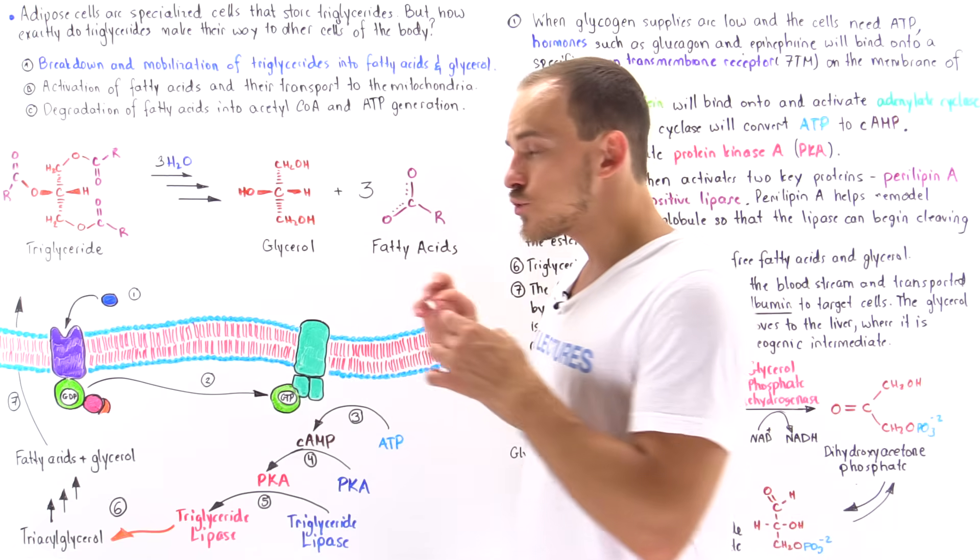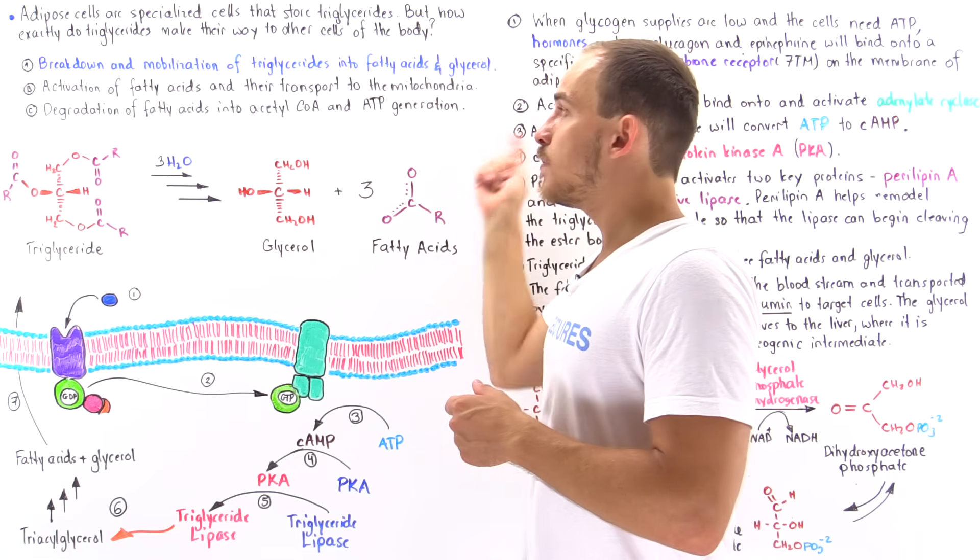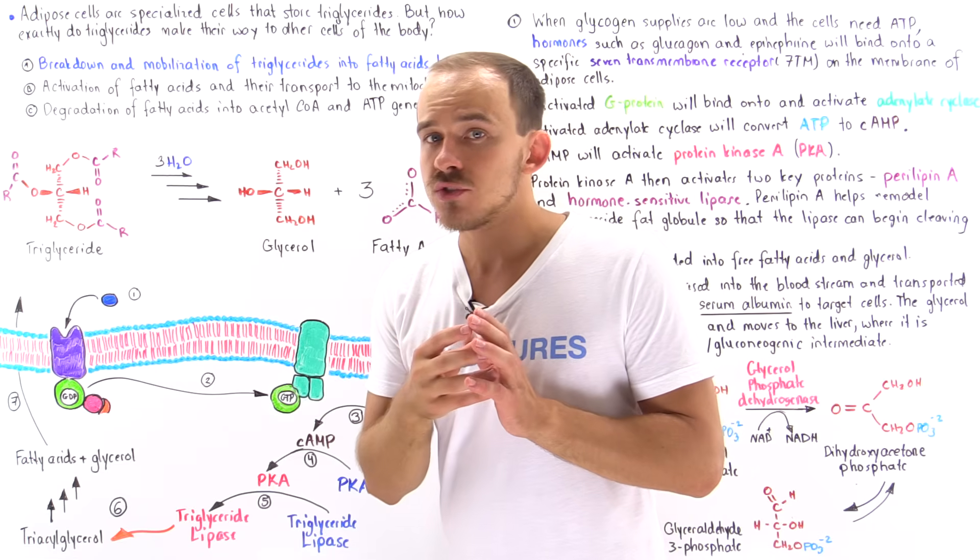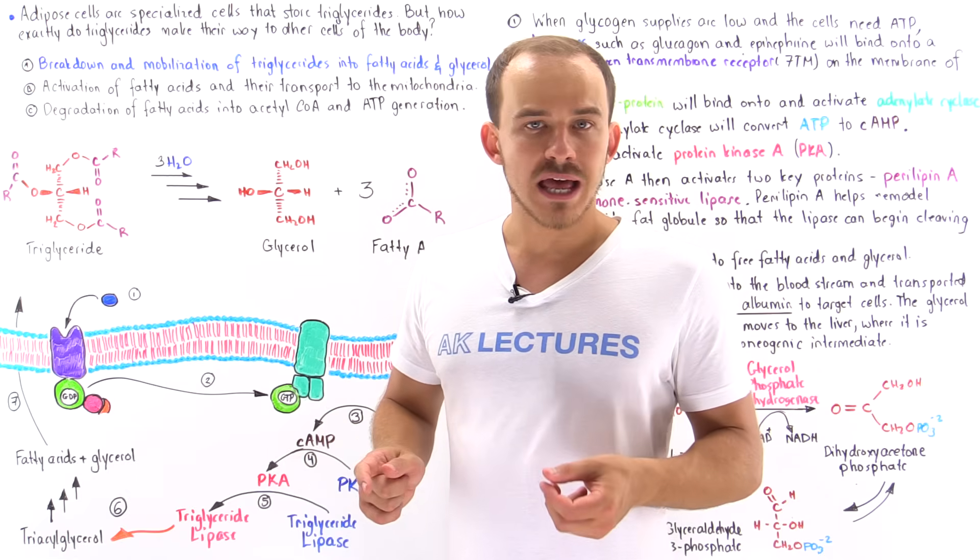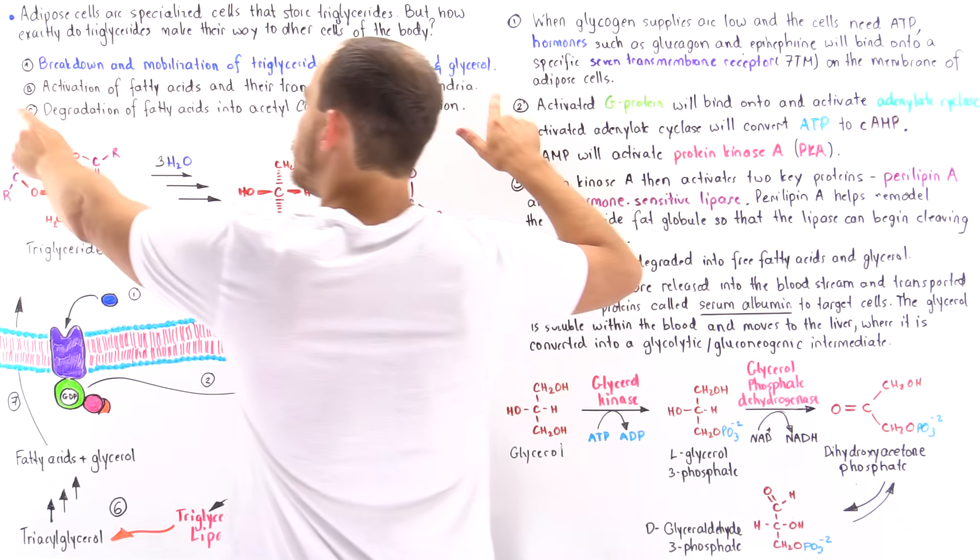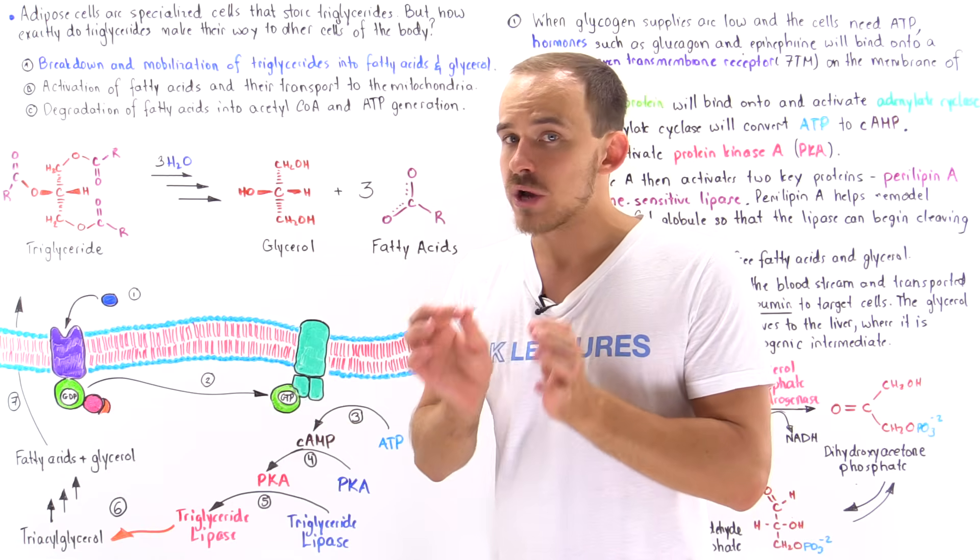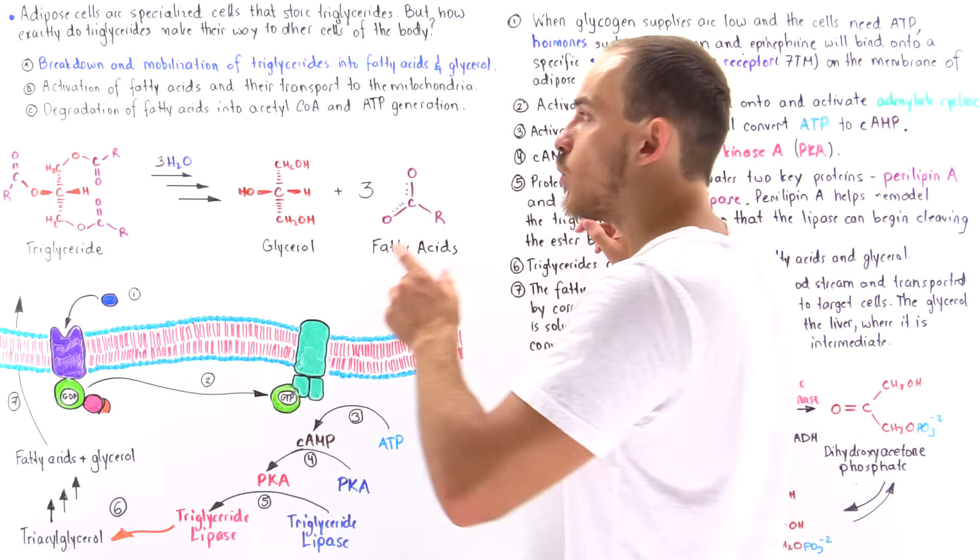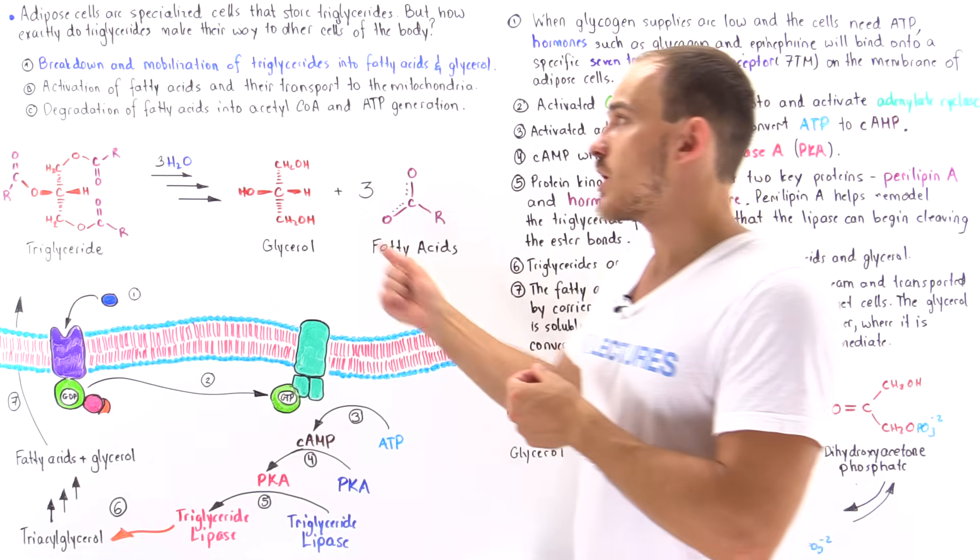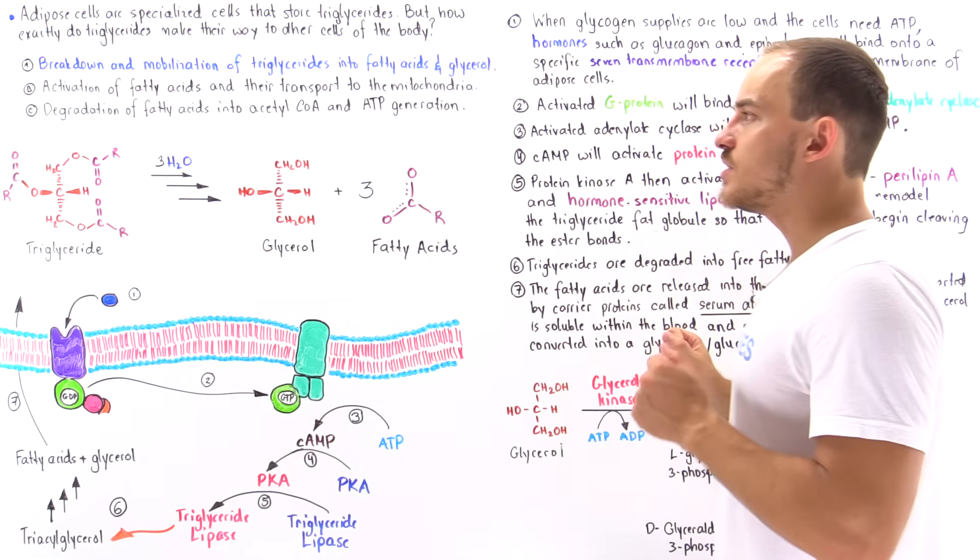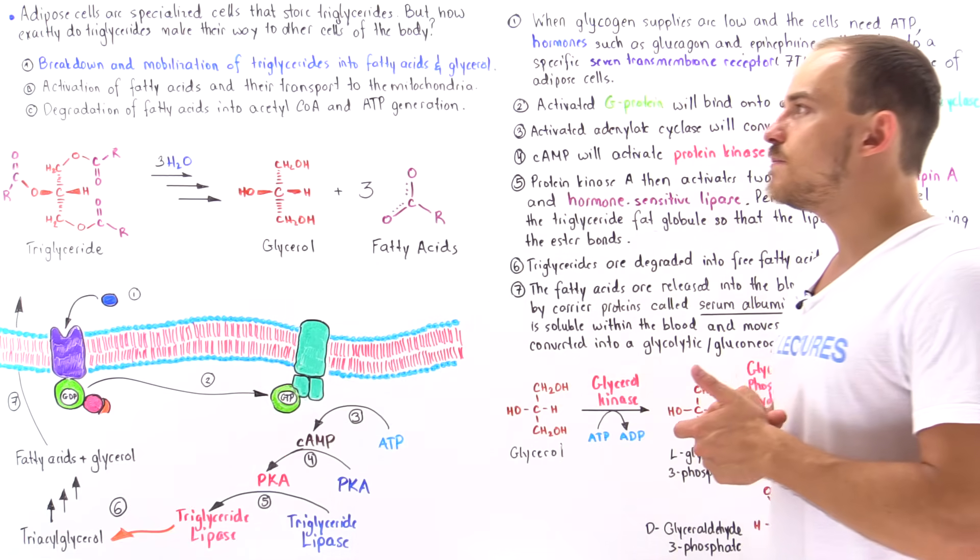In stage one, triglycerides are broken down and mobilized into their fatty acid and glycerol form. Once that takes place, the fatty acids are released into the bloodstream and carried to their target cell. Once the fatty acid makes its way into the cytoplasm of that target cell, stage B takes place. In stage B, these fatty acids are activated, made more reactive, and then transported into the matrix of the mitochondria. That's when stage C begins. In stage C, those fatty acids are broken down in the matrix of the mitochondria into acetyl coenzyme A molecules. These acetyl coenzyme A molecules can be fed into the citric acid cycle to help us generate high energy ATP molecules.